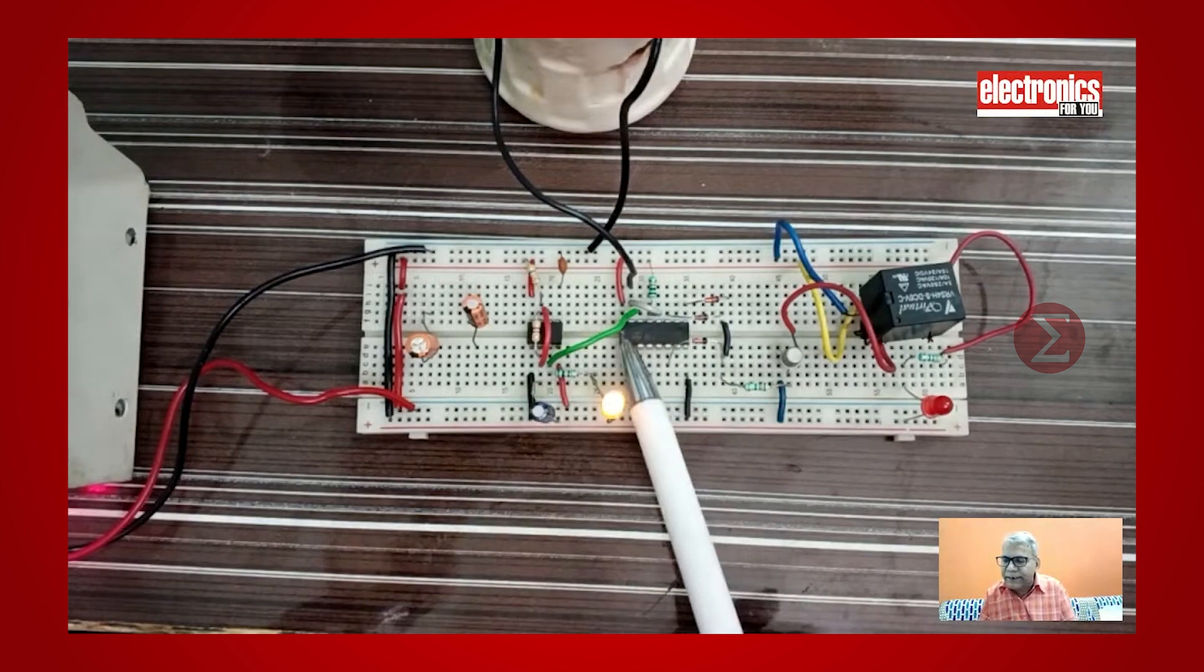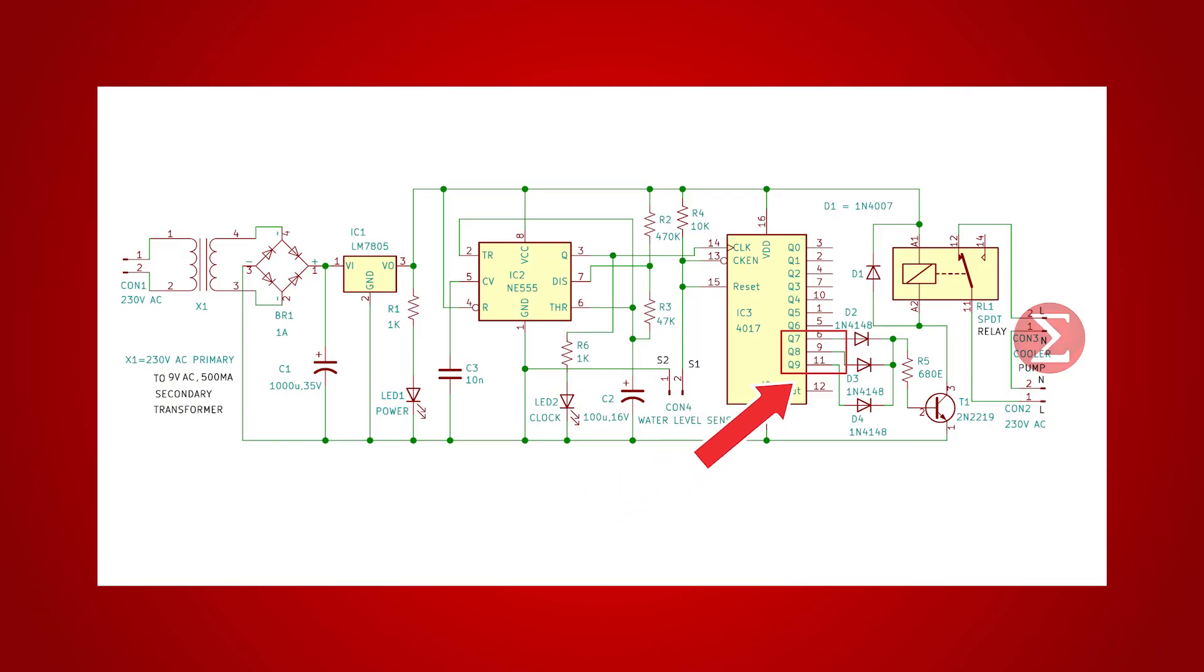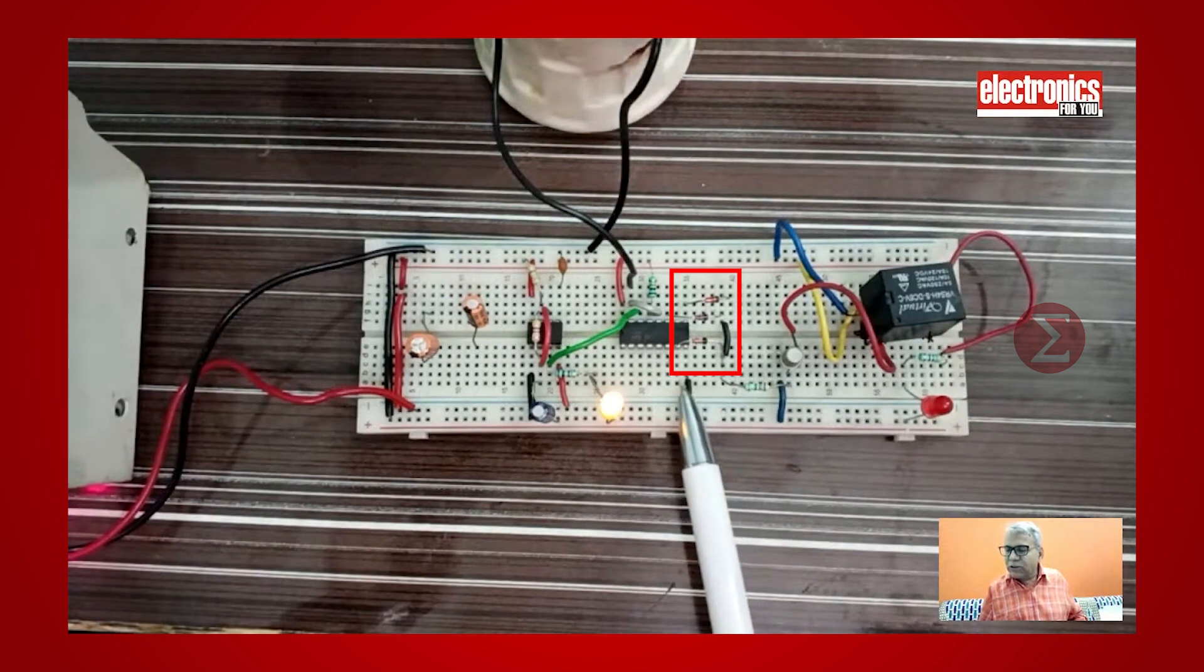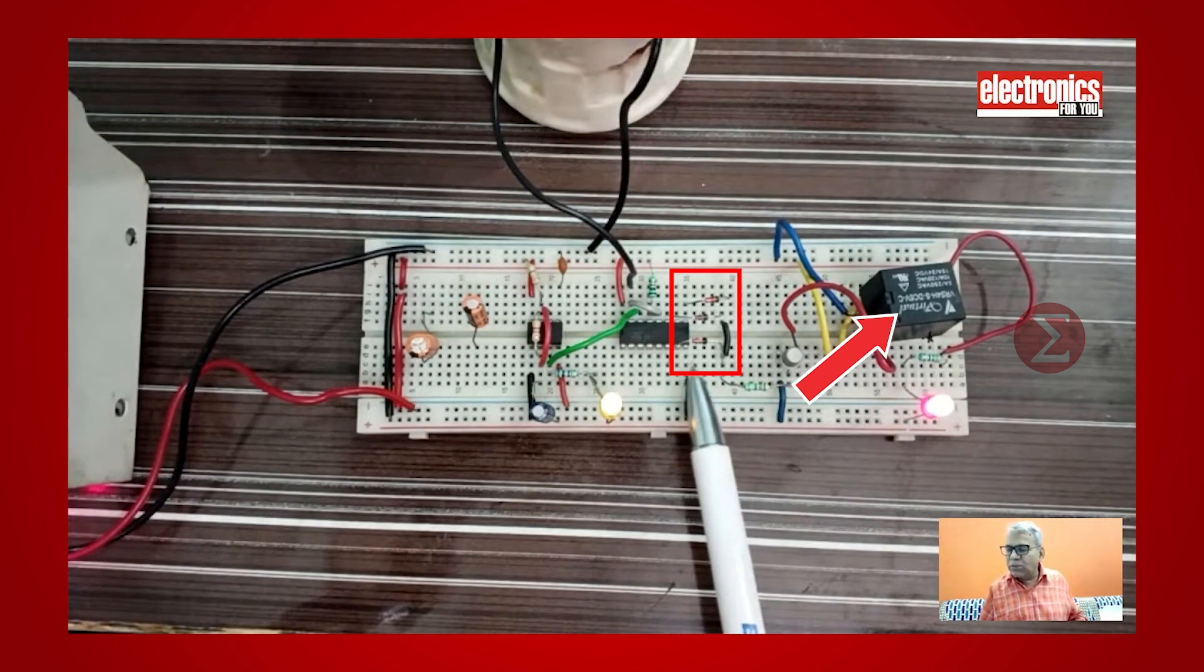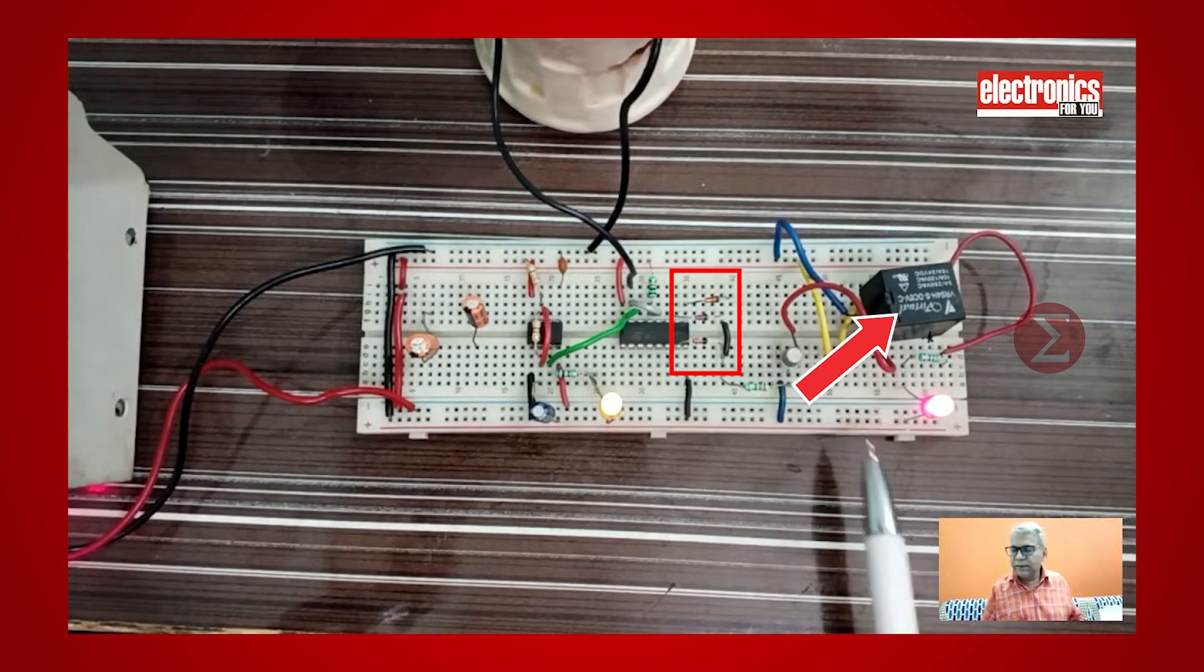We have used this clock for a decade counter 4017. It has 10 outputs but we have used only Q7, Q8 and Q9. We have connected these outputs to the diodes and shorted them at output for turning on and off of the relay, or you can say cooler pump.